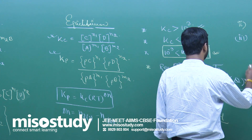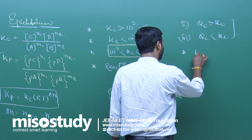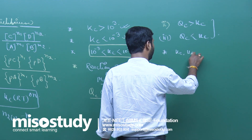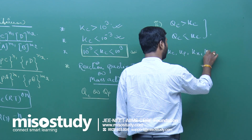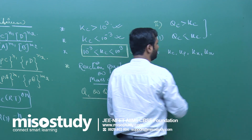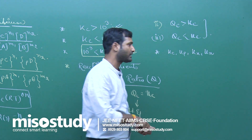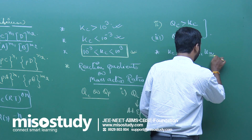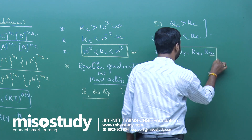We have KC, KP, KX, and KN. When we take mole fraction or number of moles, we can also derive equilibrium constants in those terms.